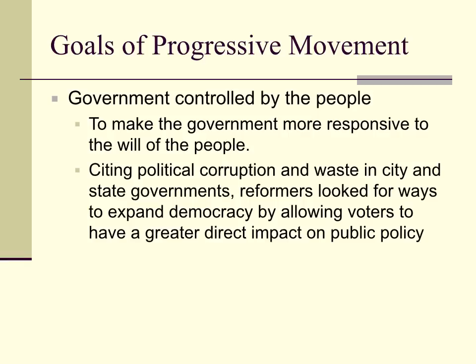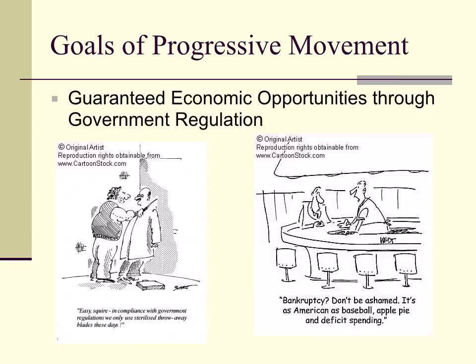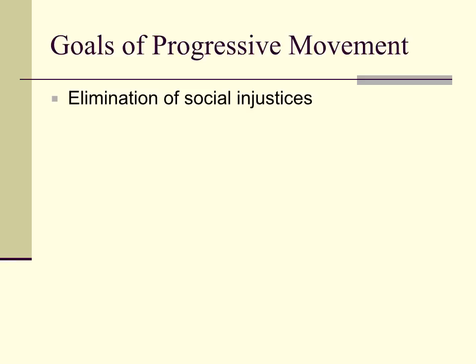The goals of the progressive movement: first, government controlled by the people — in order to make government more responsive to the will of the people, it had to be controlled by the people. There was political corruption and waste in city and state governments, so reformers said we need to expand democracy by allowing voters to have a greater direct impact on public policy. This guaranteed economic opportunities through government regulation.